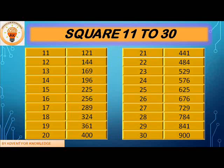20 square is 400, which we have already completed. So 21 square is 441, 22 square is 484, 23 square is 529, 24 square is 576, 25 square is 625, 26 square is 676, 27 square is 729, 28 square is 784, 29 square is 841, 30 square is 900. Let's repeat this sequence again.